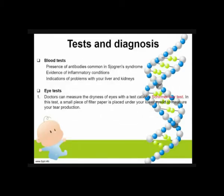Tests and diagnosis to confirm Sjogren's syndrome: the doctor may order blood tests to check for presence of antibodies common in Sjogren's syndrome, evidence of inflammatory conditions, and indication of problems with the liver and kidneys.